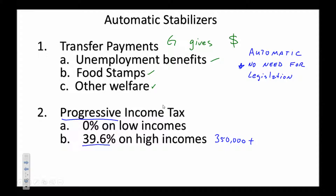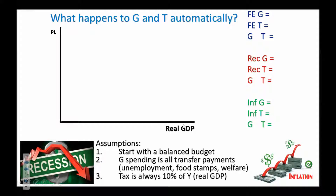When the economy is booming, taxes automatically go up because people are making more money, which has a contractionary effect and helps limit inflation. To demonstrate this, we need to make a couple of assumptions: first, we start with a balanced budget; second, government spending is entirely transfer payments — unemployment, food stamps, and welfare; and third, to keep things simple, we'll assume the tax on income is always 10%.